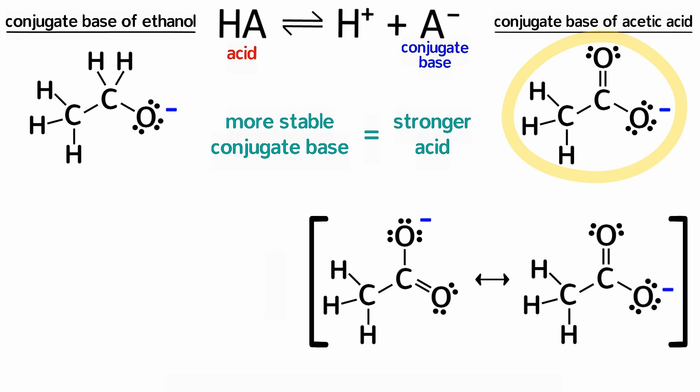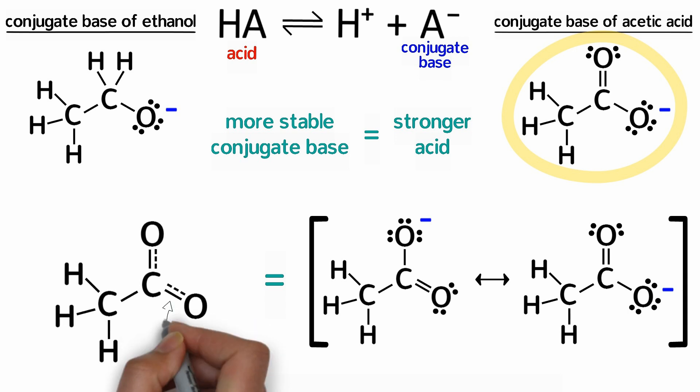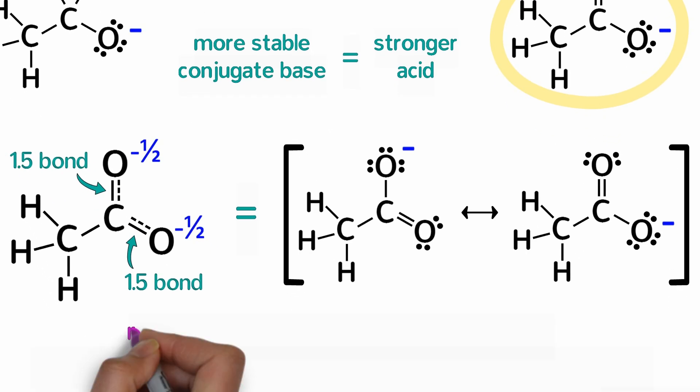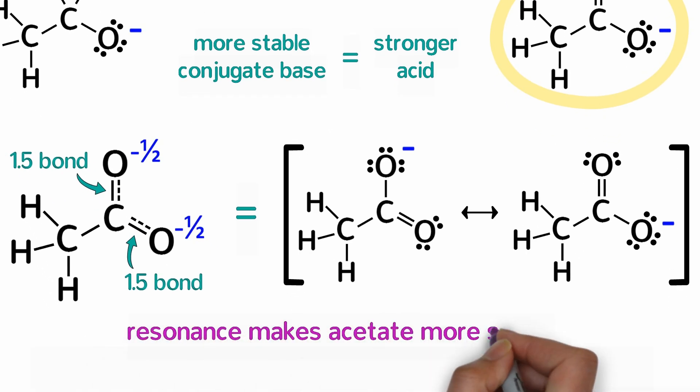More correctly, we should say that the structure of acetate is the average of these two resonance structures, making both of these one and a half bonds each, and the formal charge on each oxygen is negative one-half. That resonance causes the negative charge to spread out and makes acetate more stable.